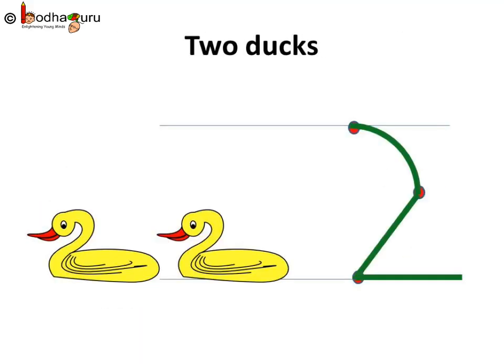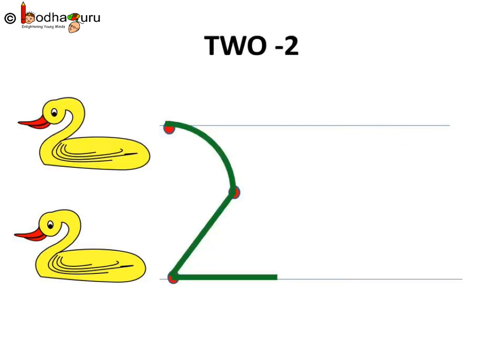One duck, two duck. Let us write 2 in our notebooks, using the three dots. One on the top line, another on the bottom line, and one somewhere in between.